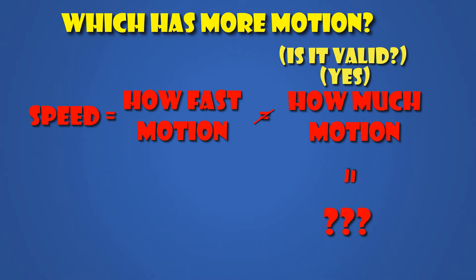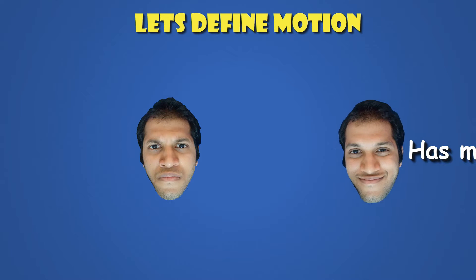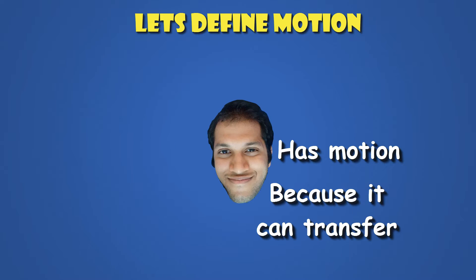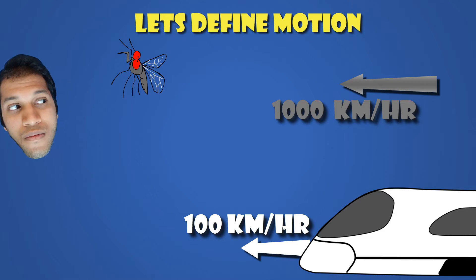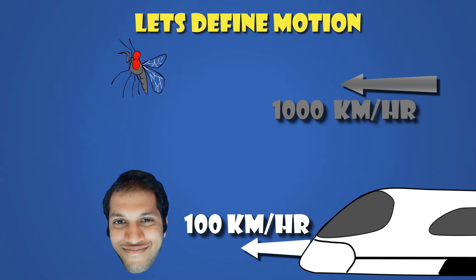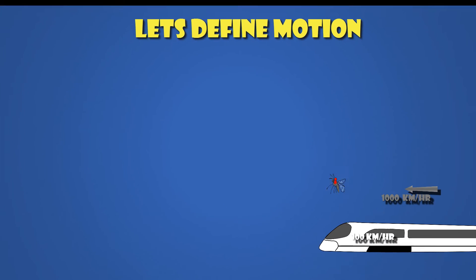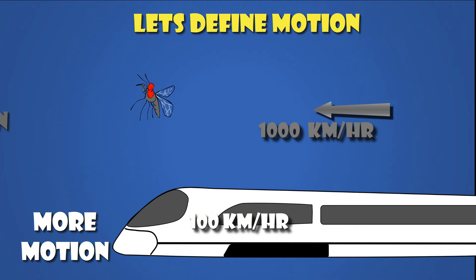The answer is yes, but to do that we need to first define motion. A good definition would be: a body has motion if it can transfer that motion. So in simple terms, a body which can transfer more motion has more motion. If this thousand kilometer per hour super mosquito were to hit me, it may cause some physical damage but it would hardly transfer any motion to me. On the contrary, if this hundred kilometer per hour train were to hit me, I would get blasted off. So clearly the train has a lot more motion compared to the mosquito, even though it is ten times slower.